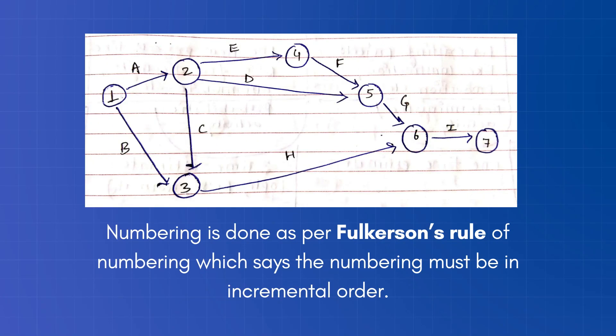Now the numbering in case of network diagrams is done as per Fulkerson's rule of numbering which says the numbering must be in incremental order. That means for a particular activity, start event numbering must be lesser than end event numbering.